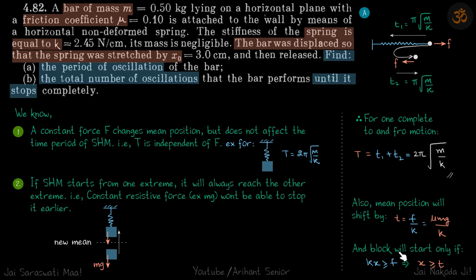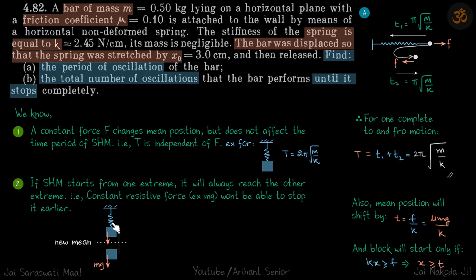So the condition is x must be greater than t for the block to start. The concept is: if you pull the block and release it, and if it starts moving, even with that constant frictional force it's going to complete at least its half cycle.